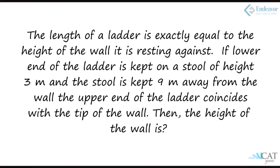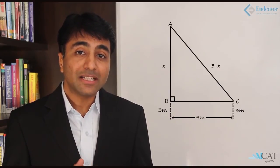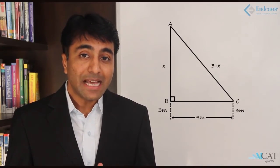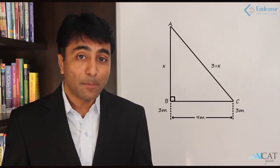Another interesting question: we have a ladder equal in length to the height of a wall — both are x meters. This ladder is kept on a stool which is 3 meters high, and the stool is placed 9 meters away from the wall. When the ladder is placed as the hypotenuse, it just touches the top tip of the wall. We need to find the length of the ladder and the wall. Looking at the diagram, we can divide the wall: the full wall is x meters, but the triangle formed has a height of x minus 3 meters, with the base as 9 meters and hypotenuse as x meters.